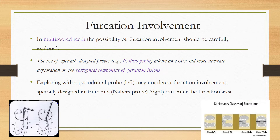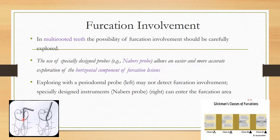Coming to furcation involvement: in multi-rooted teeth, the possibility of furcation involvement should be carefully explored. If the periodontal disease reaches the furcation area, that is called furcation involvement. It can be checked by a specially designed probe called Nabers' probe, which allows easier and more accurate exploration of the horizontal component of furcation. A straight probe may not adequately detect furcation involvement, whereas the curved Nabers' probe can enter the furcation area to expose the horizontal component. For the vertical component, a regular probe can be used; for the horizontal component, the Nabers' probe is needed.